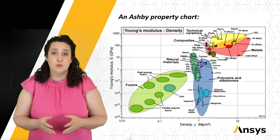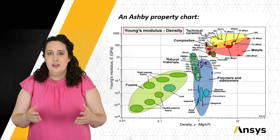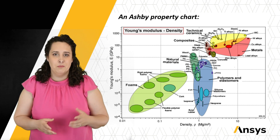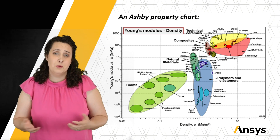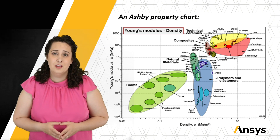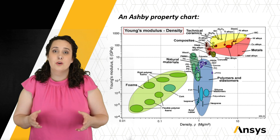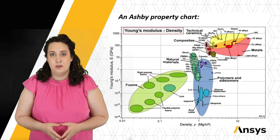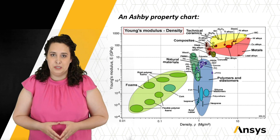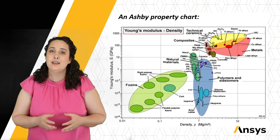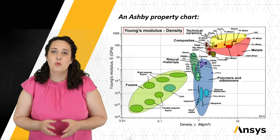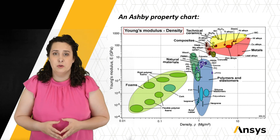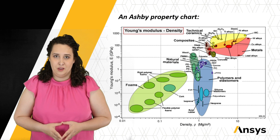There's a range because these materials might differ slightly from the raw material itself to its processing. The larger bubbles or envelopes represent general trends found with material families. In today's lesson, we'll be using these Ashby charts to compare different material properties with one another.